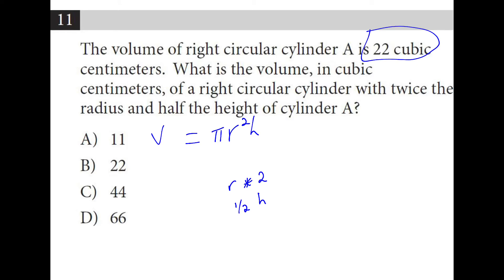We could plug in some test numbers if we wanted to, but since the radius is squared, doubling it means that we are multiplying by 4, because that's 2 squared. And then if we multiply it by a half, because the height is halved, we have times 2 instead of times 4. So 22 times 2 is 44.